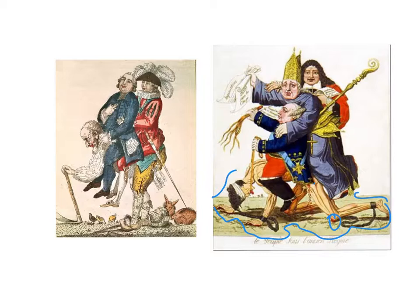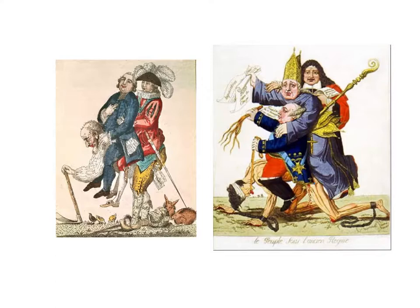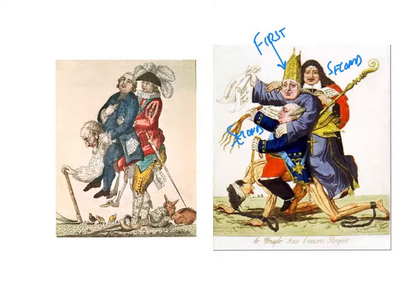Let's focus on the figure on the ground. If we look carefully, we see he's bleeding on his knees from having to carry the burden of the three above him. He's also chained — look at the shackles on his feet and his hands — and he's blindfolded. This cartoon is satirizing the inequalities of the three estates under the old regime. The bishop represents the first estate, the king and noble represent the second estate, and the man on the bottom represents the third estate.